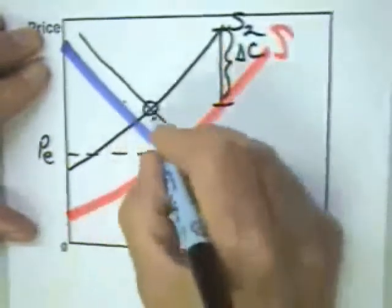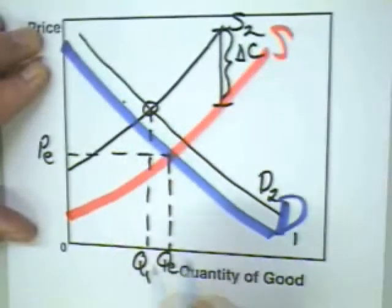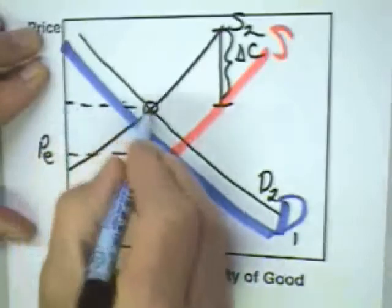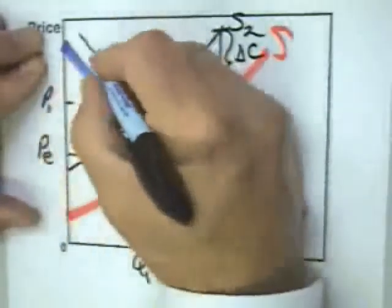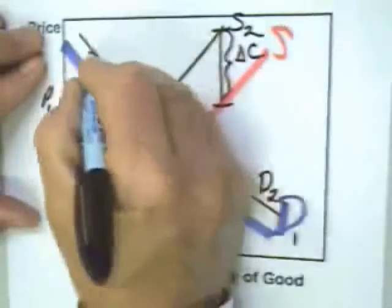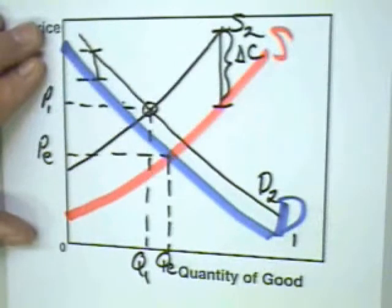The new equilibrium will be here at Q1, equilibrium price will be P1. Now again I failed to say that this vertical distance here is the added price that consumers are willing to pay for this new feature.